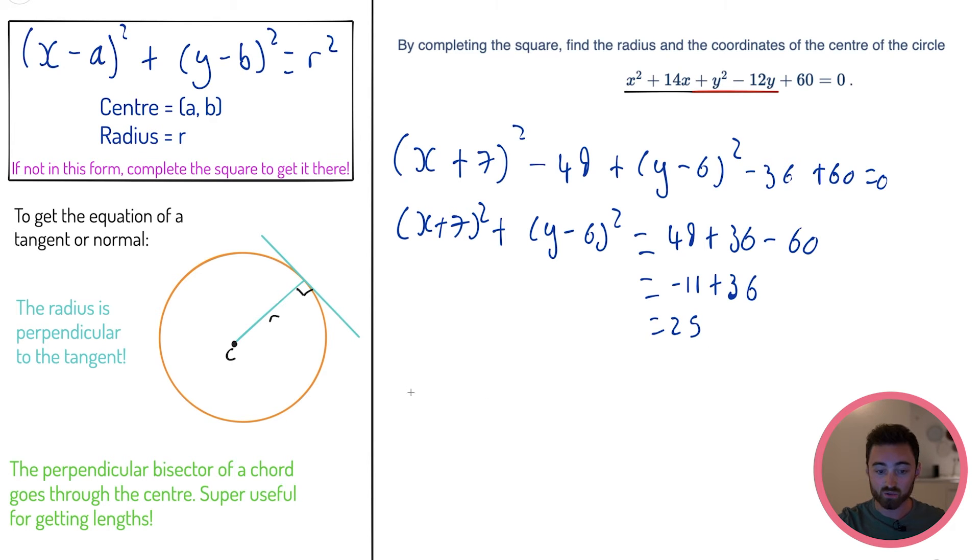The center we know is going to be (-7, 6). Why is it -7 and not 7? Because in the formula we have a minus, so this is essentially x - (-7). Be careful with that. Now we need to be careful - we have 25 here, but don't think the radius is 25. Remember in the equation we have r². So if you think about it, 25 is 5², therefore the radius is 5. That is absolutely classic.